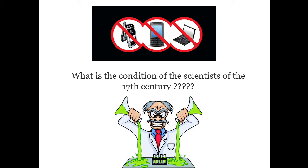The basic question I would like to ask is: what was the condition of scientists in the 17th century, when there was no mobile, no internet, no laptop? How did people really communicate with each other, especially the scientists? How did they reveal the new knowledge they had produced or gained through their research? How did they share the data obtained through research?